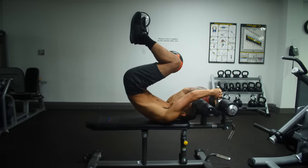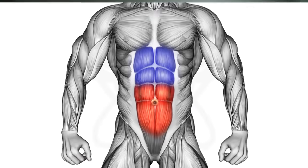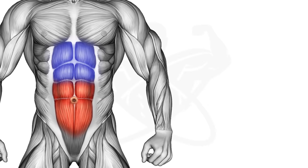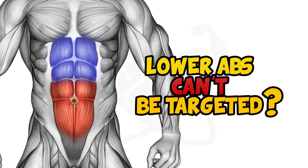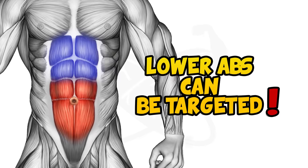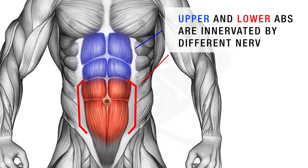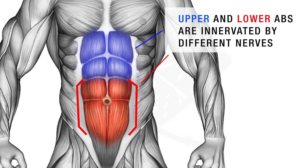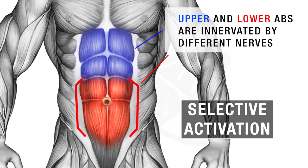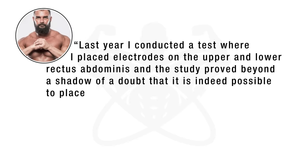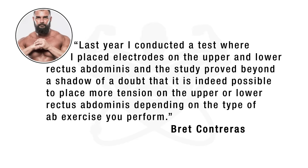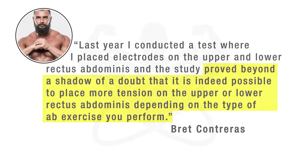In this video, that's exactly what I'll show you how to do. But before we dive into the exercises, for those who believe that the lower abs cannot be selectively targeted, research clearly indicates that it is indeed possible. This is because the upper and lower abs are actually innervated by different nerves, and this hence provides a mechanism for selective activation. Researcher Brett Contreras has performed extensive research on this very topic, with his EMG findings concluding that the upper and lower abs can beyond a shadow of doubt be selectively emphasized depending on the type of exercise you perform.